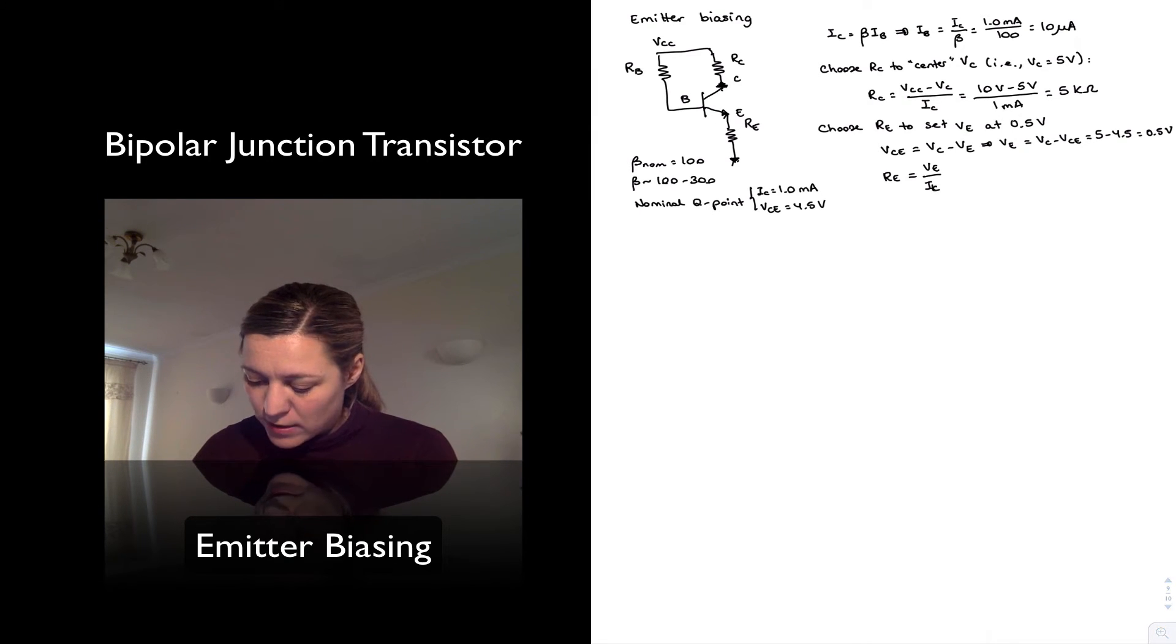And I guess I'll do IE, but since we are making the approximation that IC and IE are approximately equal, I can also rewrite this as VE over IC. So 0.5 volts divided by 1 milliamp or 500 ohms.